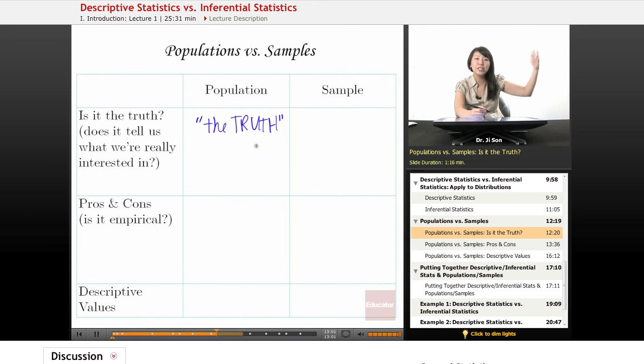So when we drop our objects from the top of a building and measure how fast they come down, we're really getting samples. And from those samples, we're trying to get at the truth. The sample is not the whole truth, but the sample does provide a window to the truth.